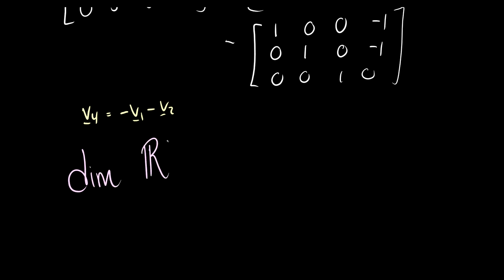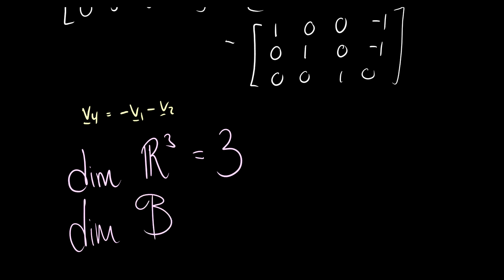So the dimension of this subspace — which spans R3 — is equal to 3. We can also say that the dimension of this set of vectors, called B, is equal to 3. That was the dimension. If you have any questions please leave them in the comments below and I'll answer them the best that I can.